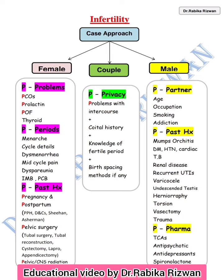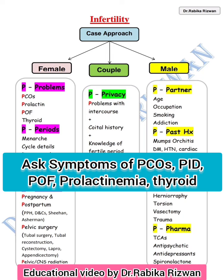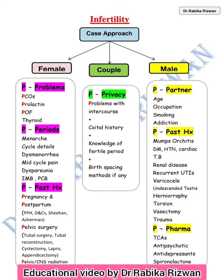So it's all about P. For the female: P for problems — PCOs, PID, prolactin کے مسئلے، P for pharmacological drug history, P for thyroid. P for problems: PID, prolactin, thyroid — یہ سارے problems ہیں جو female کے ہیں. P for periods.